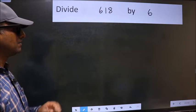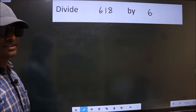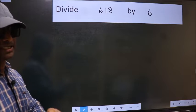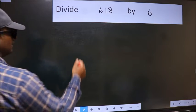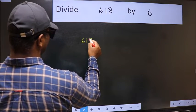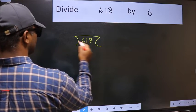Divide 618 by 6. To do this division, we should frame it in this way: 618 here and 6 here.